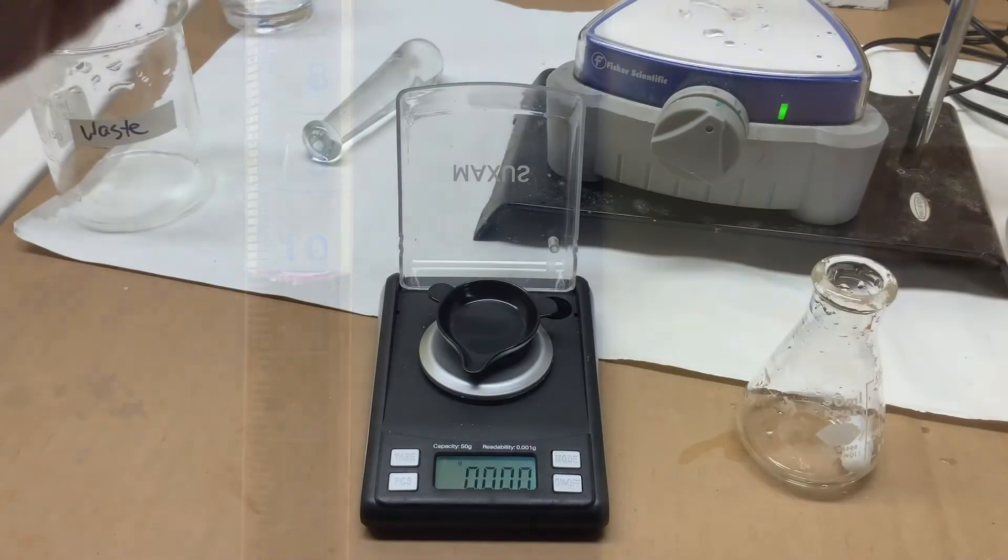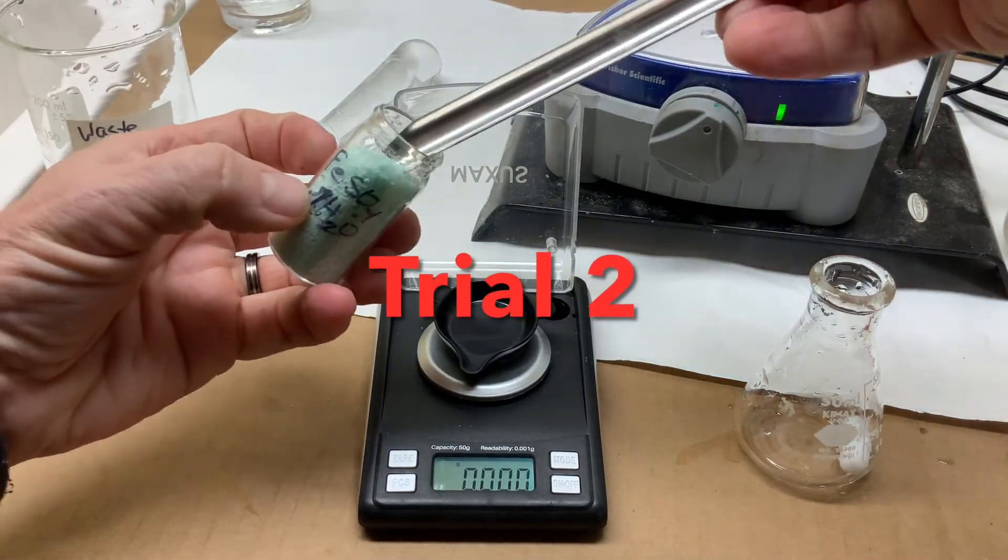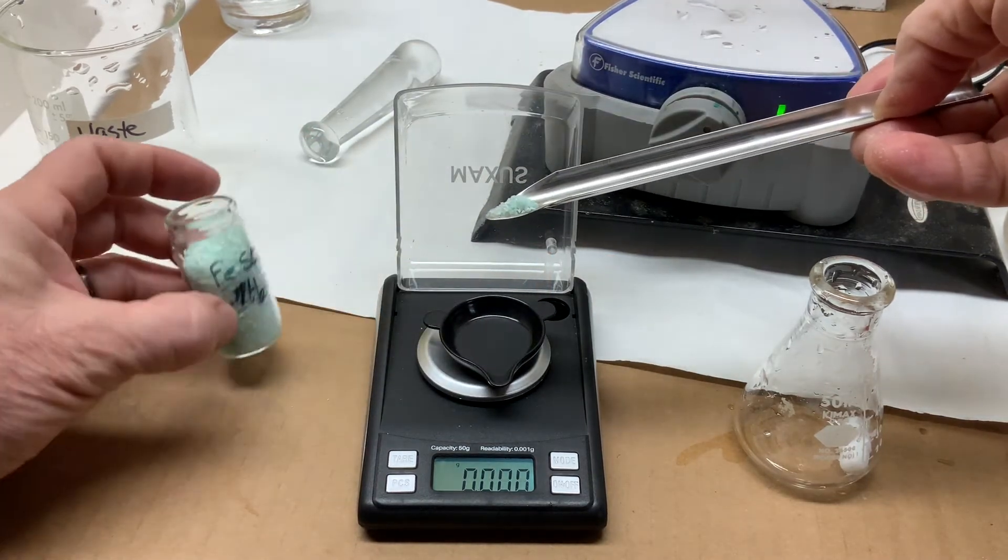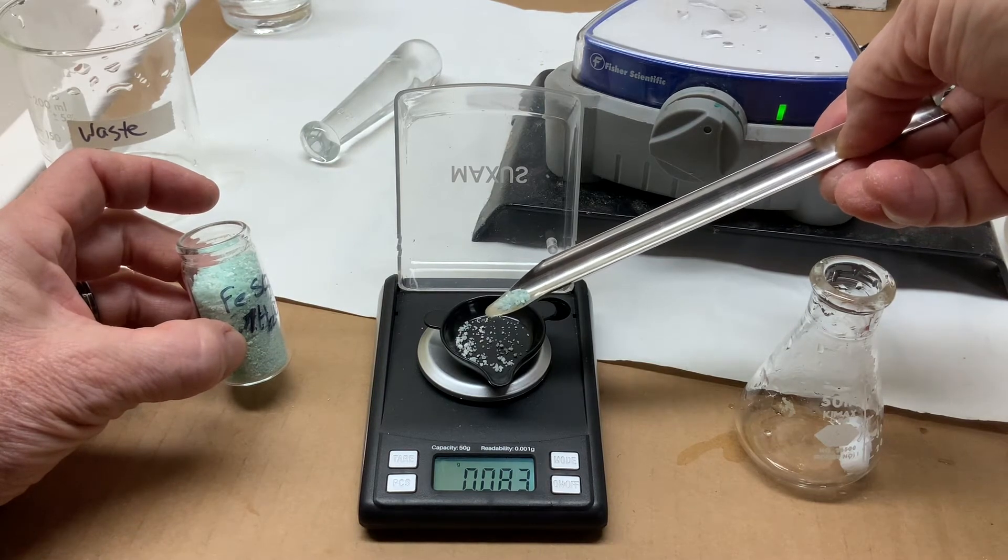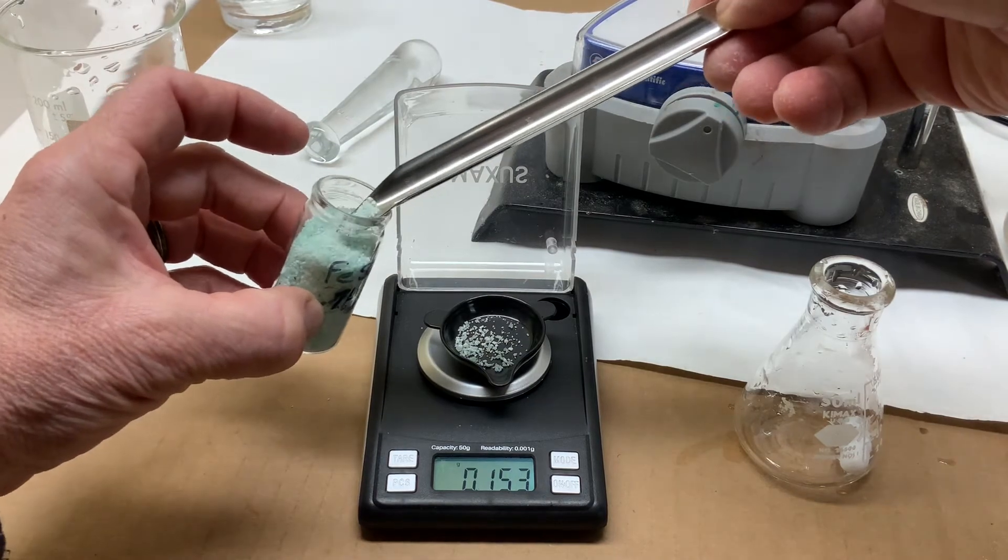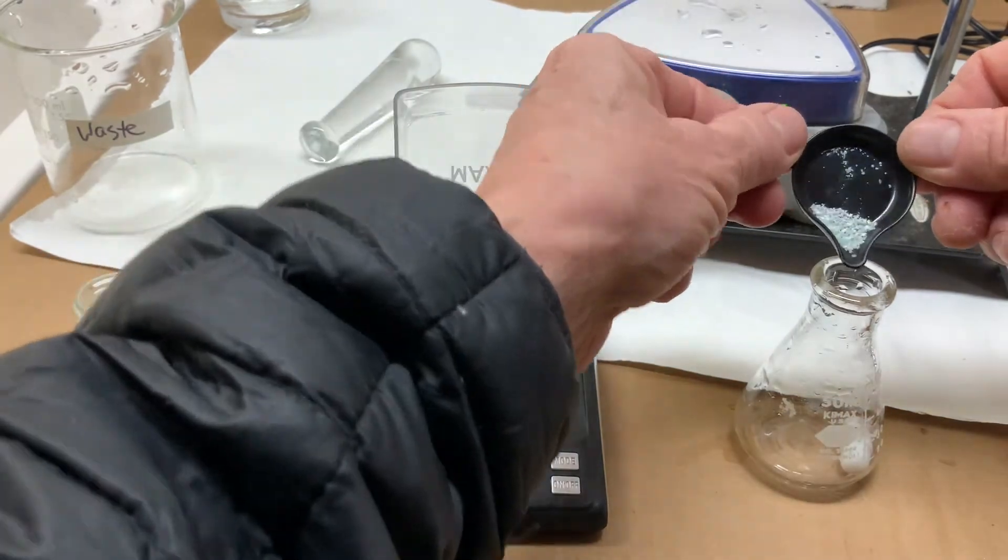Remember that burettes read down, not up. For trial 2, record the iron sulfate mass again and set up a second column in your data table. The purpose of this procedure is to determine the molarity of the potassium permanganate, which we call standardization.